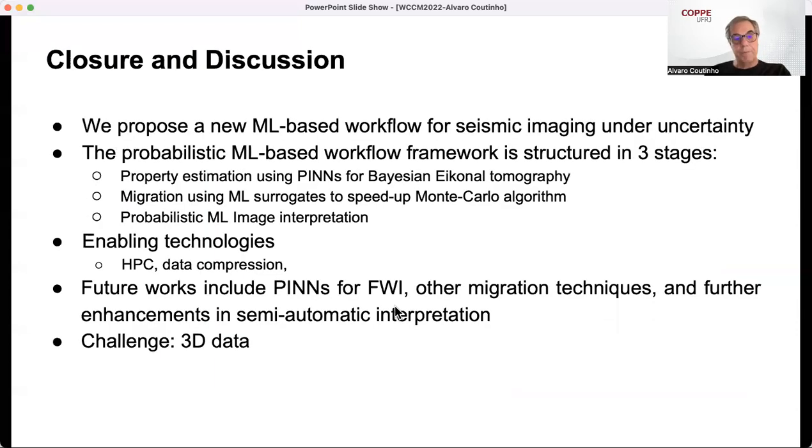To close, in this paper we have proposed a new machine learning-based workflow for seismic imaging under uncertainties. The probabilistic machine learning-based workflow is structured in three stages. Properties estimation, using physics-informed neural network for Bayesian Eikonal tomography. Migration, using machine learning surrogates to speed up Monte Carlo algorithm. A probabilistic machine learning image interpretation, based on a geometrical constructor called RGTs. We use enabling technology, of course, we still have to train, so HPC is still important. Data compression is still important. Future works include PINNs for FWI, other migration techniques, and further enhancement in semi-automatic interpretation. And, of course, the challenge is 3D data. Thank you very much, and that ends my presentation.